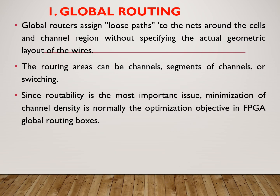Global routing means it will assign a loose path around the cells without specifying the actual geometric layout of wire. That is the important point. In global routing, the actual layout of any wires or metal is not done. But in detailed routing, the actual geometric layout is specified. So global routing assigns the loose path without specifying the actual geometric layout of wire or metal.